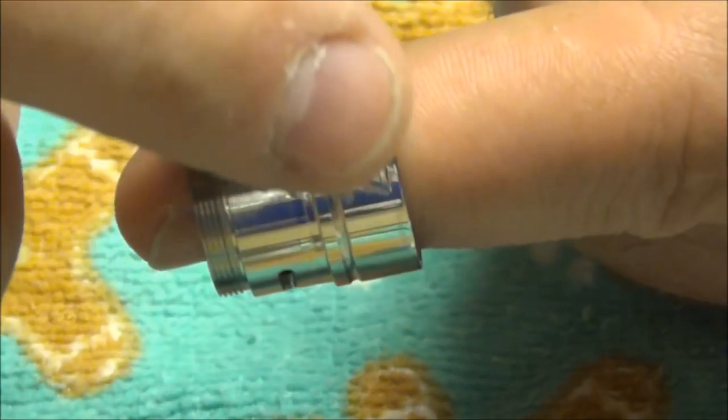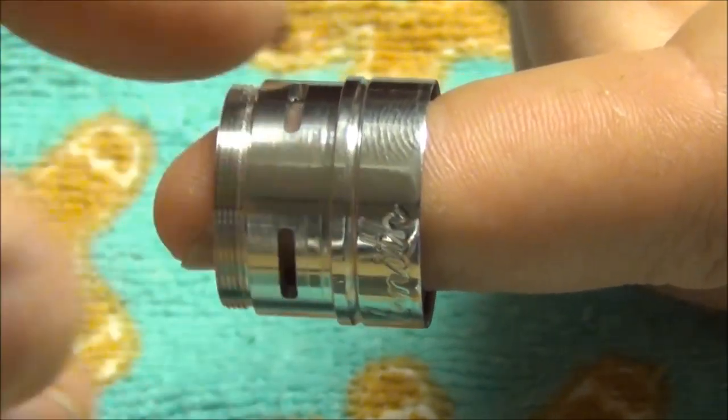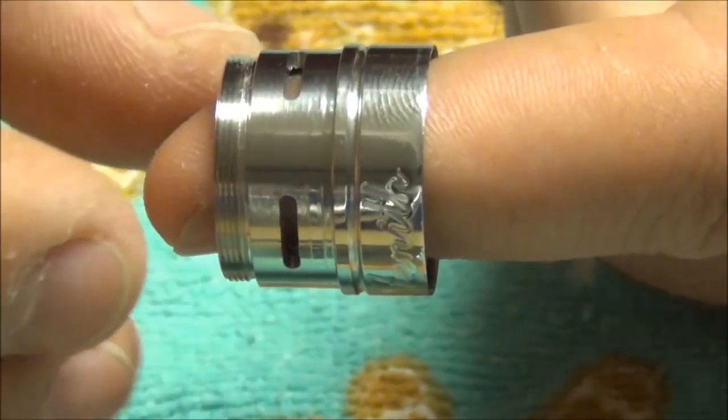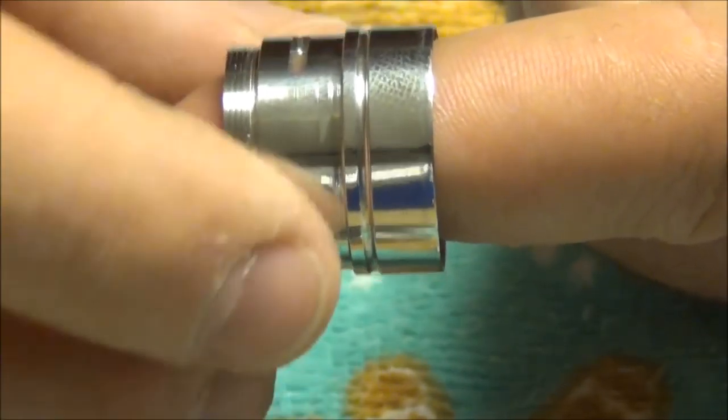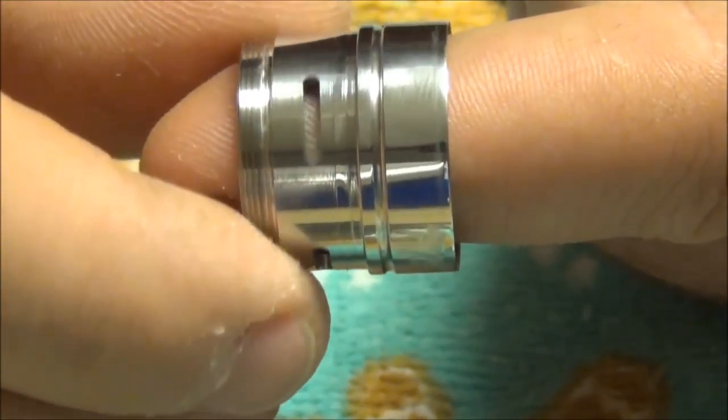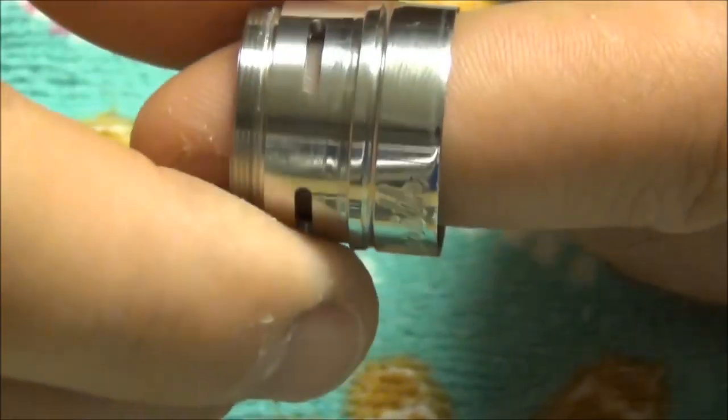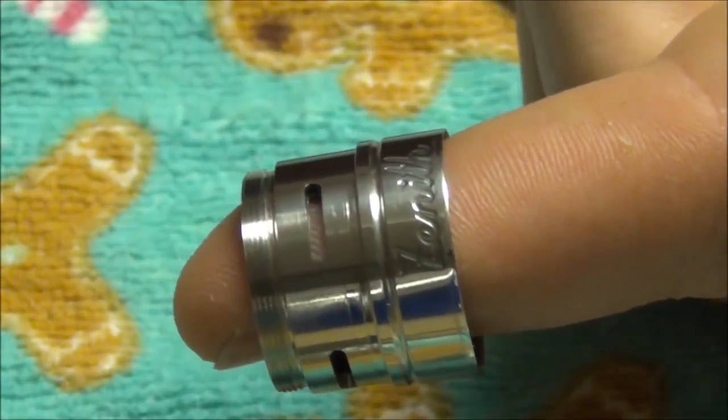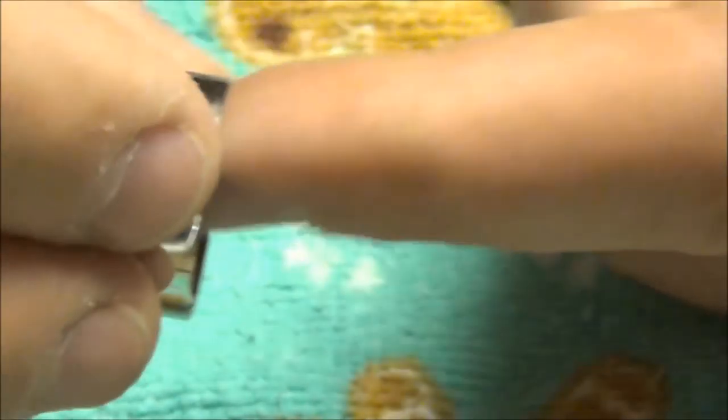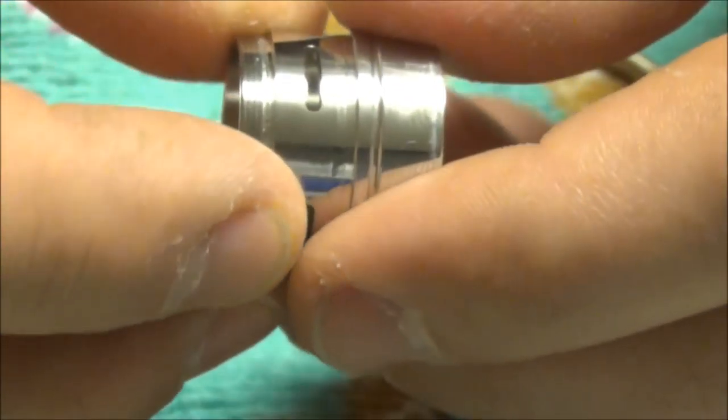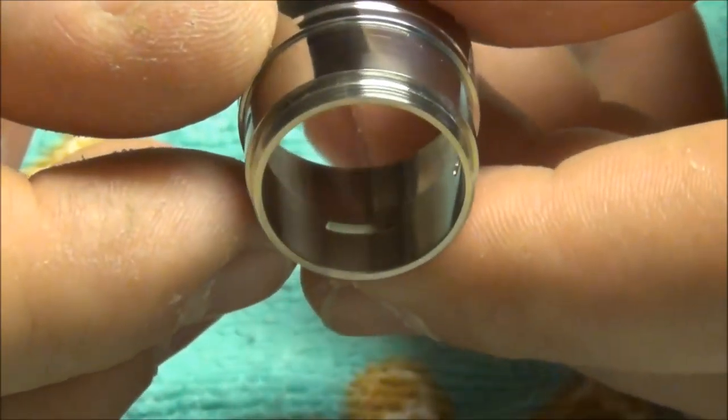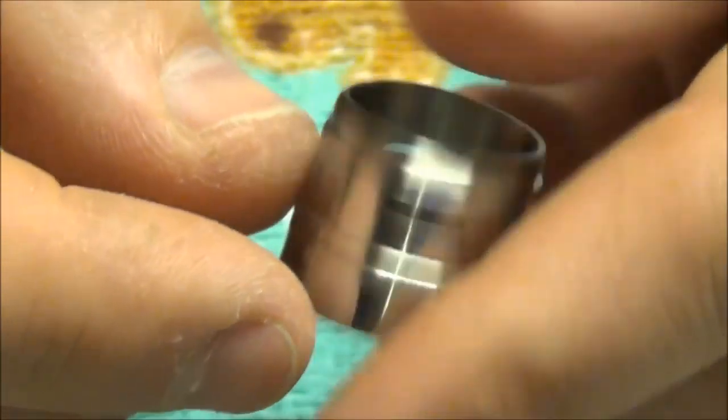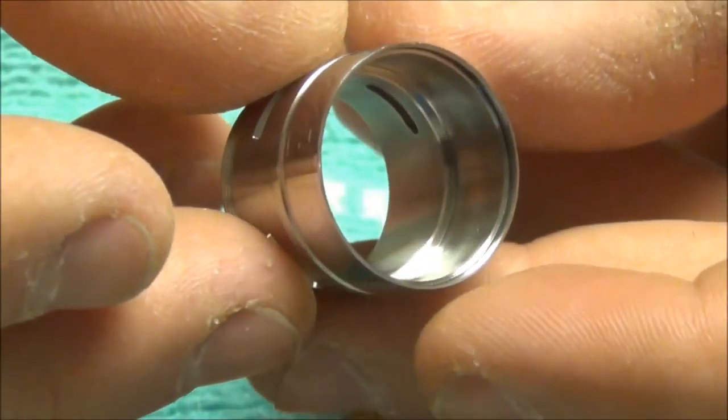The barrel exposes the engraving of the zenith or zenith. We've got one, two, and three. So you can set it for dual coil configuration or single coil configuration, which is great, man. Again, threading, perfect. No crispy crunchiness. Let's get on the inside of this thing so you guys can see.